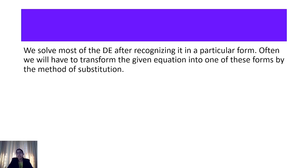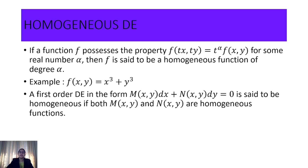Before using the method of substitution, we have to study a particular type of function called a homogeneous function. If a function possesses the property that f(tx, ty) = t^α · f(x, y) for some α, then we say that function is homogeneous and the degree of that function is α.